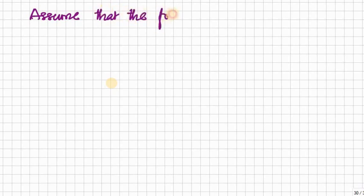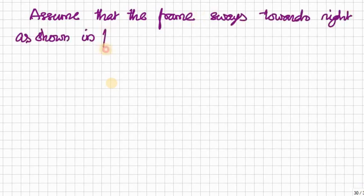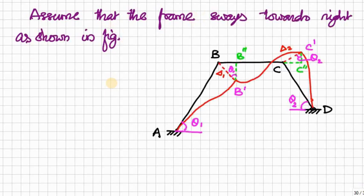Assume that the frame sways towards the right, just as an assumption. The diagram will be like this. See here — this AB member, A is fixed so there is no rotation, but B is a joint and delta 1 is perpendicular to the AB member. Remember, perpendicular to AB member at 90 degrees.